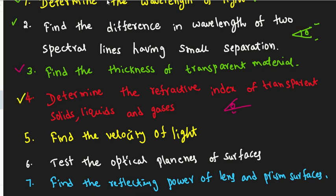The fourth application is to determine the refractive index of transparent solids, liquids, and gases. We can measure the refractive index using Newton's rings concept with the formula: mu equals (dm² minus dn²) divided by (dm'² minus dn'²).